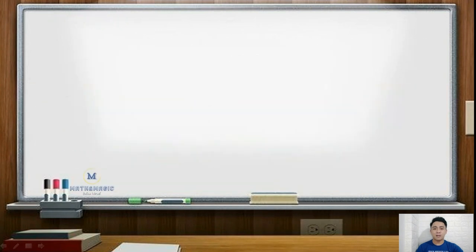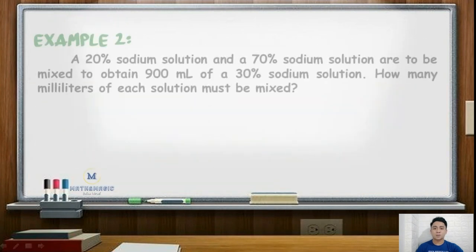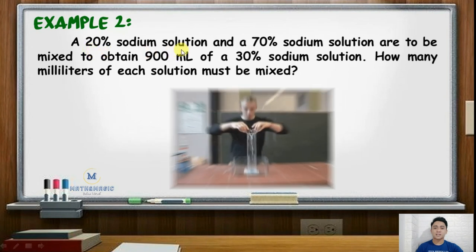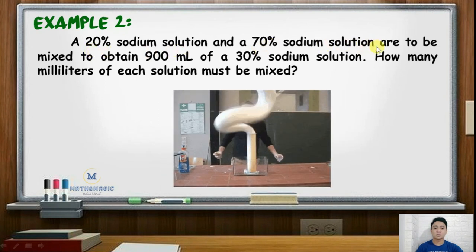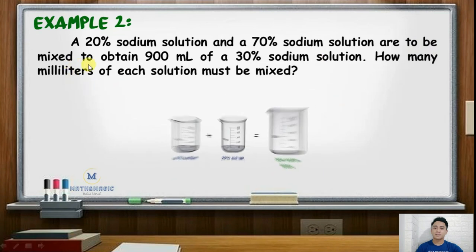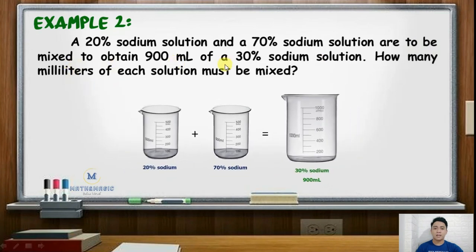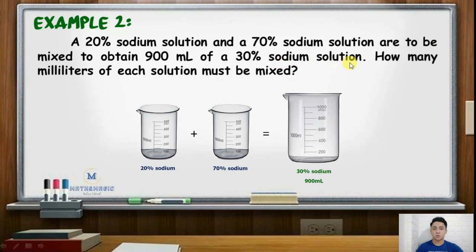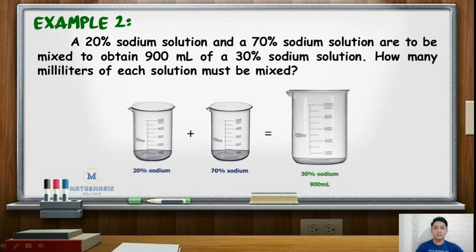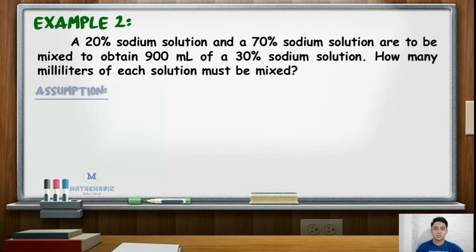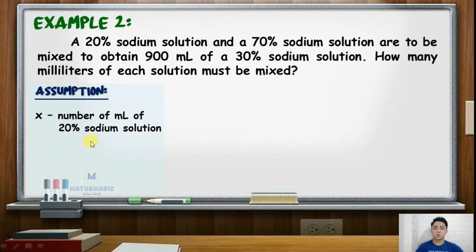For our second example, a mixture problem: a 20% sodium solution and a 70% sodium solution are to be mixed to obtain 900 ml of a 30% sodium solution. How many milliliters of each solution must be mixed? Just like example 1, we will first define our variables. We let X be the number of milliliters of 20% sodium solution and Y be the number of milliliters of 70% sodium solution.